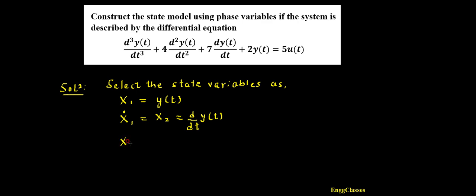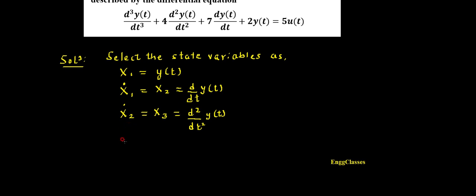Moving further, the next state variable I can select is X2-dot, which can be represented as X3, which is equal to d²y(t)/dt². So this is X2-dot. Similarly, moving further, I need to select the next variable: X3-dot is equal to d³y(t)/dt³.